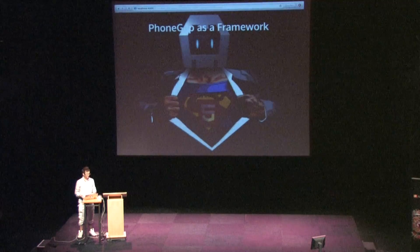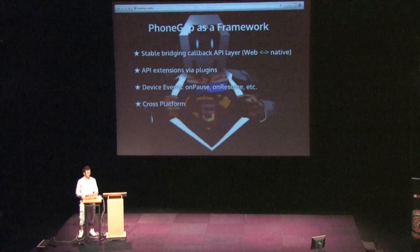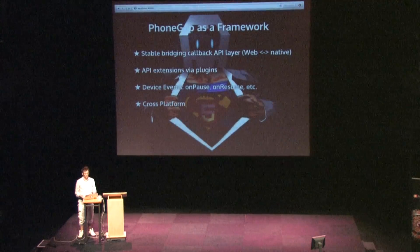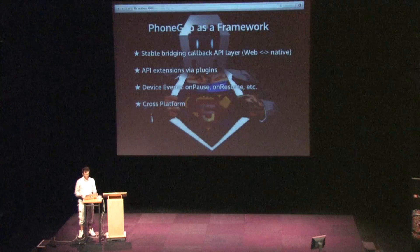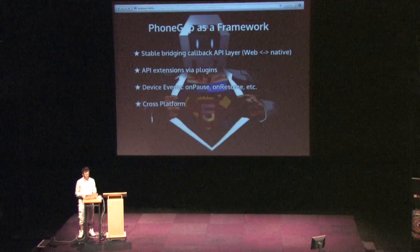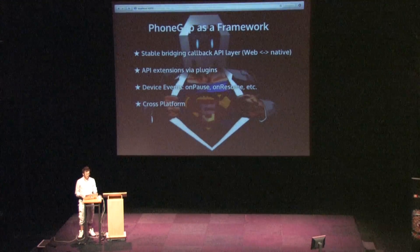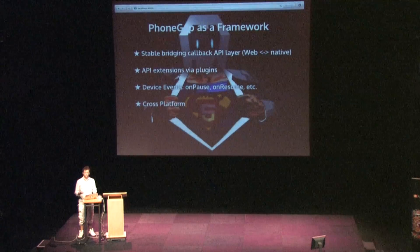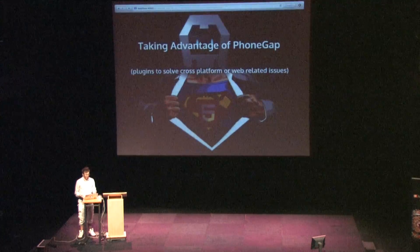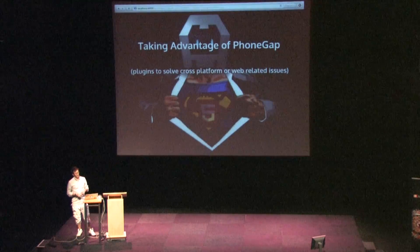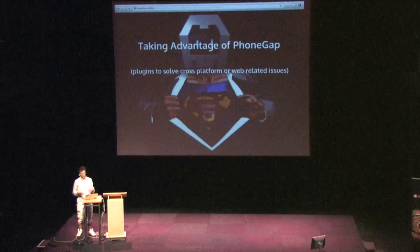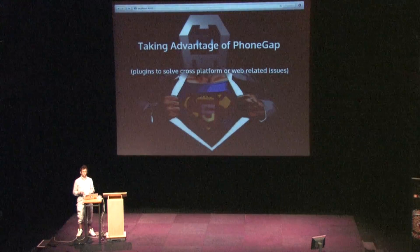I'm going to talk about PhoneGap as a framework now. We use PhoneGap — we could have written custom stuff, but PhoneGap has an incredibly stable API and a great layer between web and native. So why reinvent the wheel? The Adobe team and other contributors are going to upgrade and maintain it for us. There's a great API for writing plugins, PhoneGap provides events like on pause, on resume, and all that cool stuff — and it's cross-platform. For us, taking advantage of PhoneGap means accessing device features like Game Center or Android Play Services, so we rely heavily on the plugin architecture.